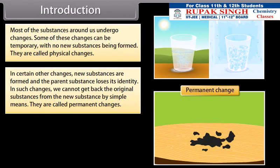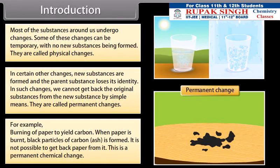For example, burning of paper to yield carbon. When paper is burnt, black particles of carbon ash are formed. Now it is not possible to get back paper from it. This is a permanent chemical change.